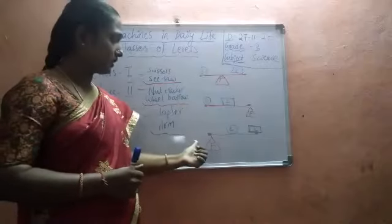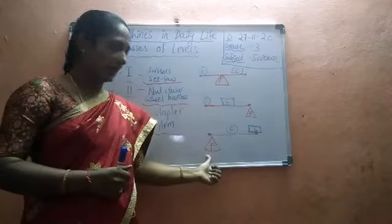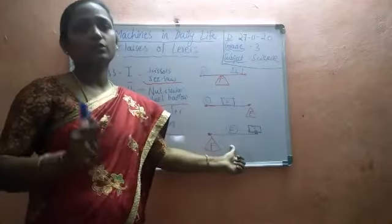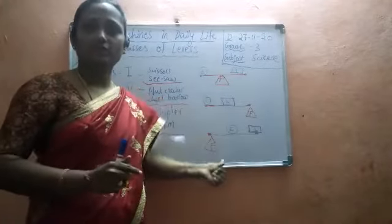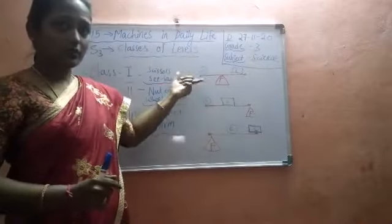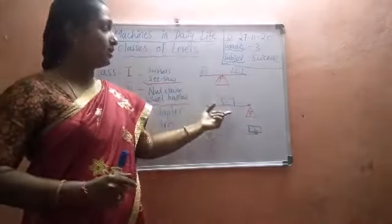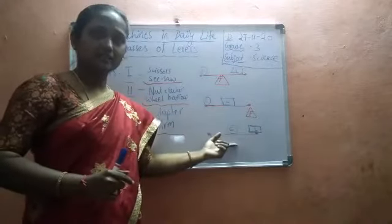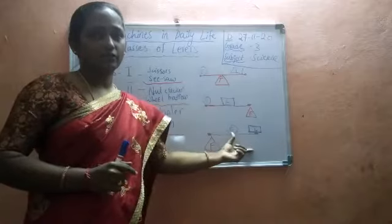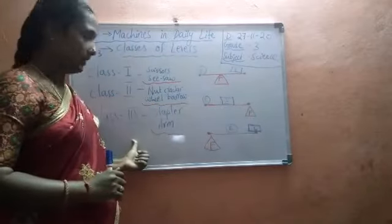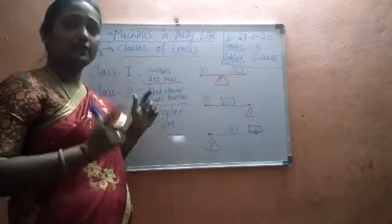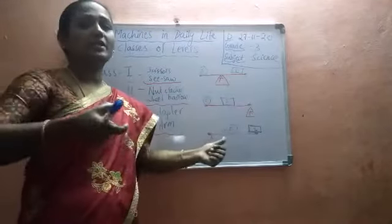In class 3 levers, the fulcrum is at one end, the effort is in the center, and the load is at the other end. An example is a stapler — it is fixed at one end, but the effort is applied in the center.